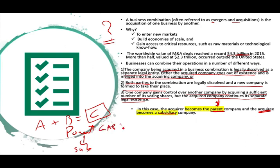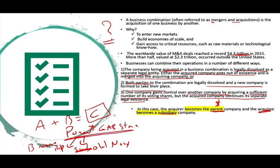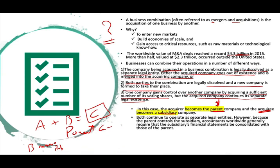For example, the Gap Store is the parent company of Old Navy and the parent company of Banana Republic. The parent company owns the subsidiary. Old Navy is a subsidiary to the Gap Store. You have an acquirer, which is the buyer, and a subsidiary, which is the company being bought. Both companies continue to operate as separate legal entities — the Gap Store has its own stores and operations, and so does Old Navy and Banana Republic.